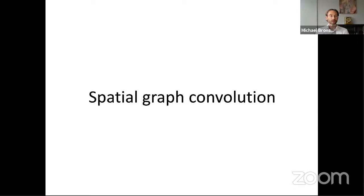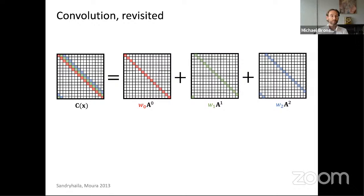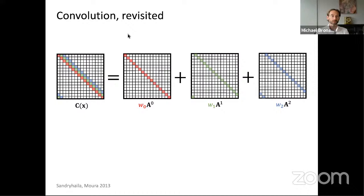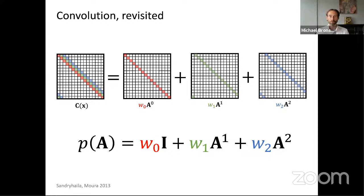Let's now talk about the other side of the coin — the spatial model for graph convolutions. Looking at the one-dimensional ring graph and the adjacency matrix, which is nothing else but the shift operation. Remember how convolutions look: they are multidiagonal matrices with fixed elements on each diagonal. We can decompose such matrices as a linear combination of powers of the adjacency matrix. Power zero means the identity matrix, power one means shift by one position, power two means shift by two positions. So we can write convolution as a polynomial in the adjacency matrix — exactly what we saw in ChebNet, but using the adjacency matrix A instead of the Laplacian.